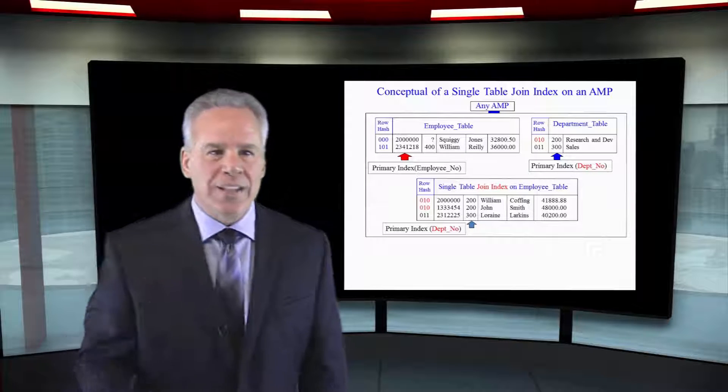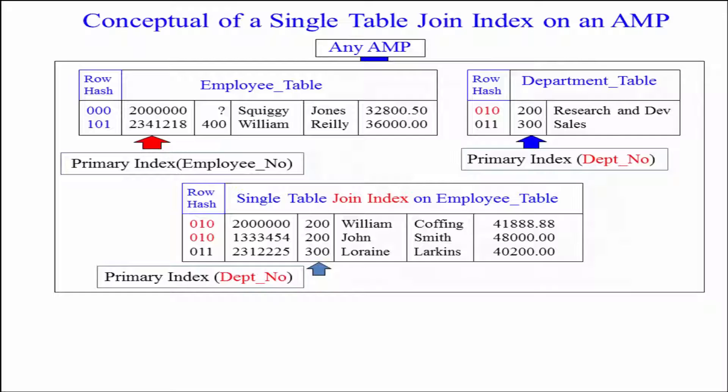In our employee table up here, I've got this just on the single AMP. The primary index is employee number. If someone says, select everything where employee number equals 2 million, it's a single AMP retrieve, and that's fantastic.